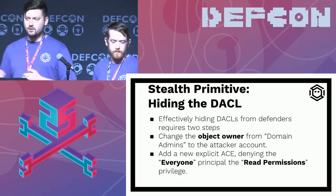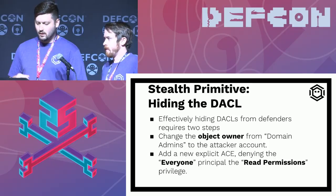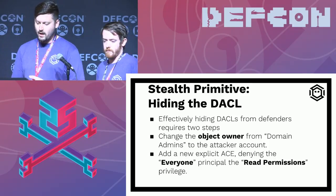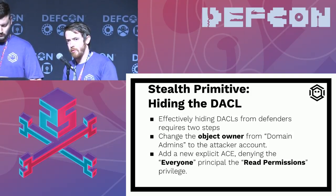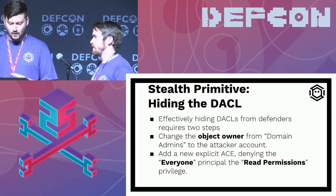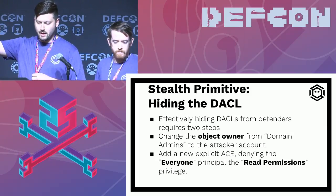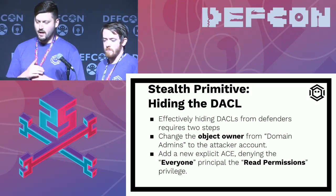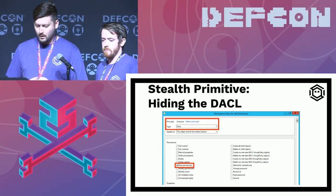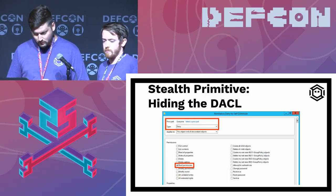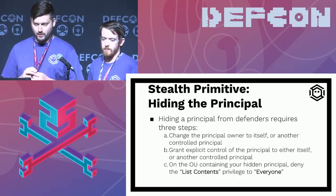How can we hide the DACL? Hiding it requires two steps. First, I change the object owner for the object I'm backdooring away from Domain Admins to another principal I control — because object owners have implicit full rights despite any explicit denies. Second, I add a new explicit deny ACE — which takes precedence over anything else in the DACL — denying the 'Everyone' principal the read permission privilege. Then the DACL can't be audited by any other principal except the one that's backdoored.